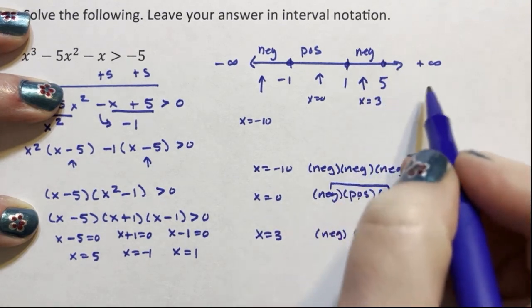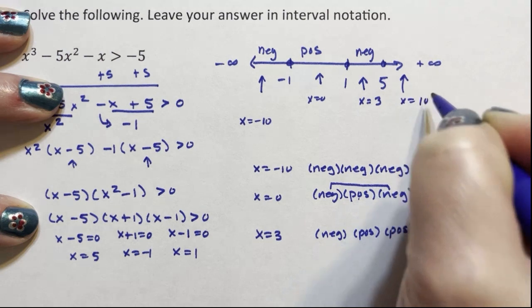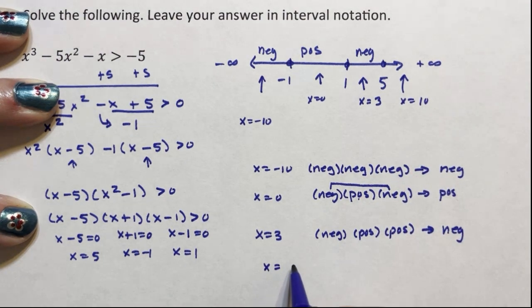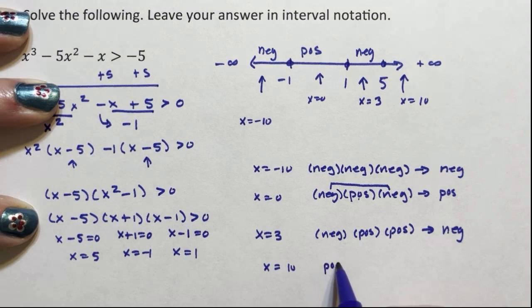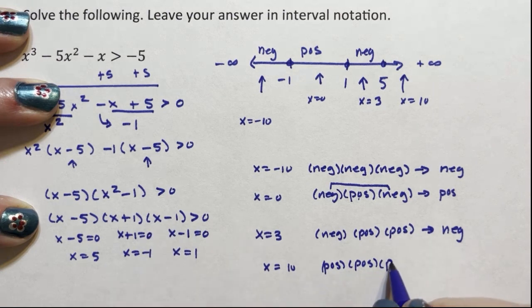And then we're going to choose something over here. Let's go with x equals 10. It could be 100, it could be 1,000, just something bigger than 5. 10 minus 5 is positive. 10 plus 1 is positive. 10 minus 1 is positive. And they're all positives. They're going to multiply out to be a positive.